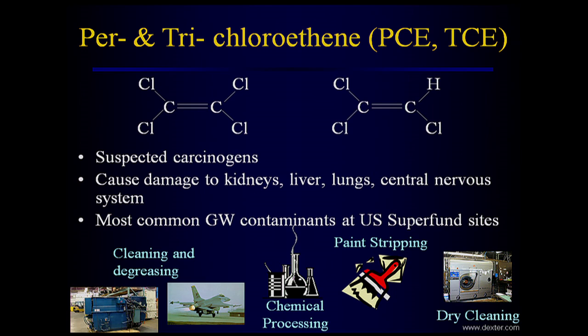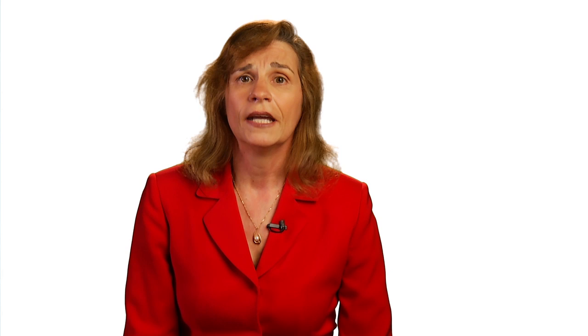Let me introduce the chemicals of concern I'll be dealing with in this talk. The two chemicals I'll be discussing most are called perchloroethylene (PCE) and trichloroethylene (TCE), shown on the slide. Both of these compounds are suspected carcinogens that cause damage to the kidney, liver, lungs, and central nervous system. They're very common groundwater contaminants because we used them commonly in many different industries, including in the dry cleaning industry. PCE was the major compound used to dry clean clothes. We also used them as solvents to clean metal pieces in electronics and other industries. So they've commonly been used, commonly released into the environment, and have become a long-term groundwater threat.